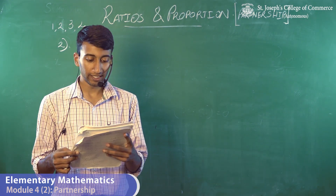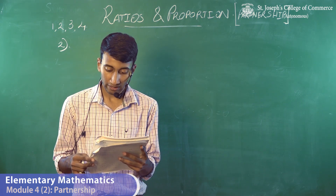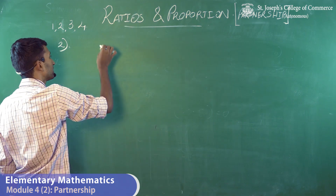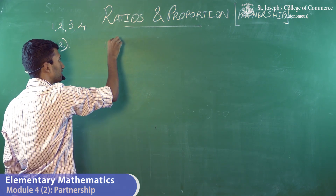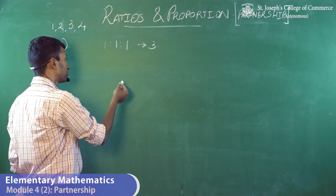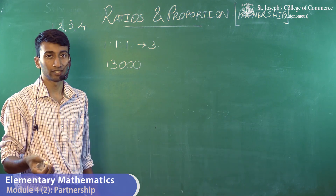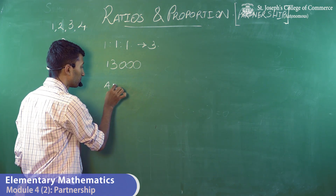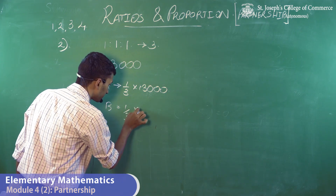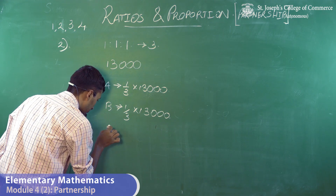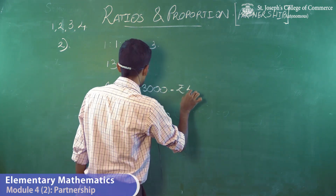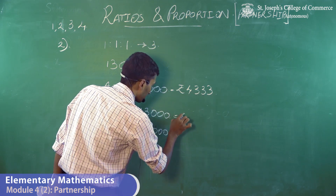The second sum says A, B, and C are equal partners in the business and they earn 13,000 from the business — divide the profits in their ratios. Since A, B, and C have invested the same amount, the ratio is 1:1:1. For every three parts, each person contributes one part, so the 13,000 is split equally. A gets one-third of 13,000, B gets one-third, and C also gets one-third of 13,000, which equals 4,333 for each.